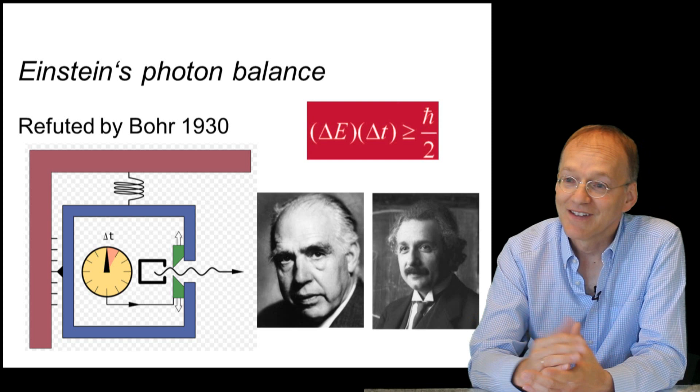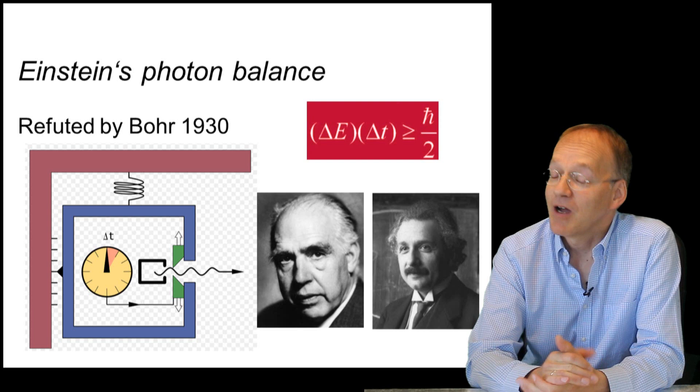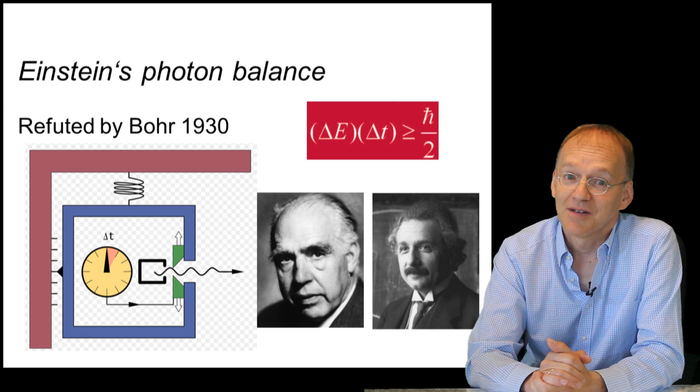And ironically, Einstein had forgotten to take into account his own theory of general relativity. And so, you might say Bohr defeated Einstein at a very important point in the history of physics.